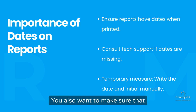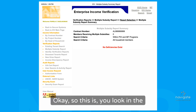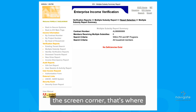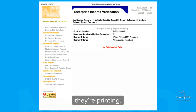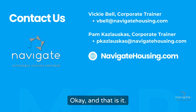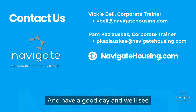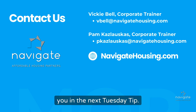You also want to make sure that dates are on your 90-day reports. Looking at the top left corner of the screen, that's where those dates are going to print. If you don't see them, make sure that you are handwriting the date and your initials. If you have any questions, please contact us — Vicki or myself. Have a good day, and we'll see you in the next Tuesday tip.